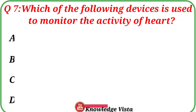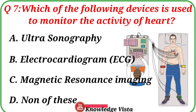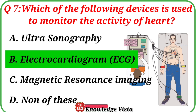Question No. 7. Which of the following devices is used to monitor the activity of the heart? Your options are: A. Ultrasonography, B. Electrocardiogram (ECG), C. Magnetic resonance imaging, D. None of these. Correct answer is option B: Electrocardiogram (ECG).